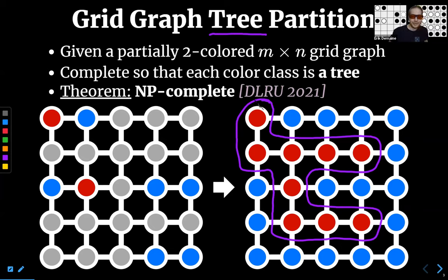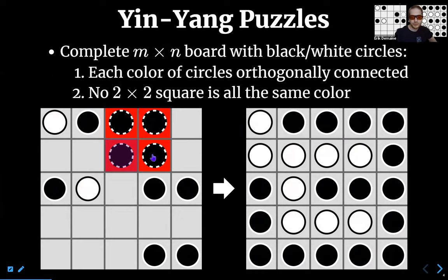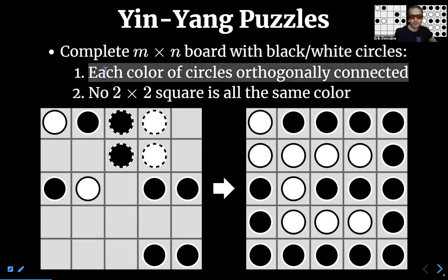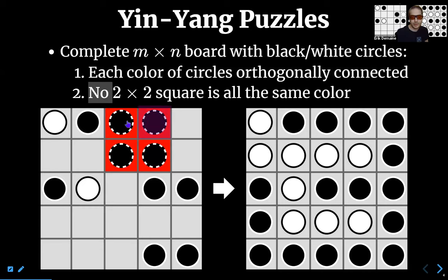Now we get to the titular yin-yang puzzle. We're going to look at the picture and take a kind of dual of it. You're given an n-by-n board, and some of the square cells are pre-labeled with white or black circles. You want to fill in the other blank squares to satisfy two properties: each color class is connected, and there are no monochromatic two-by-two squares. So here when I made a two-by-two black square, that was forbidden.